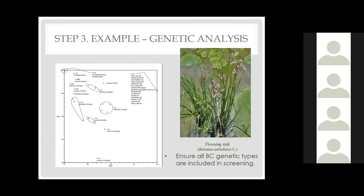During screening, it is important that all genetic types of the target plant are tested. For example, BC has two genetically different types of flowering rush. Living samples of both types have been shipped to Switzerland for screening. One genetic type is limited to a single lake — Bouchy Lake near Cornell, shown as a red dot in the upper left of the map. We're trying to eradicate this type, but the screening includes it just in case that effort fails. The focus of the agents is on the more widespread type, which also occurs throughout the United States.